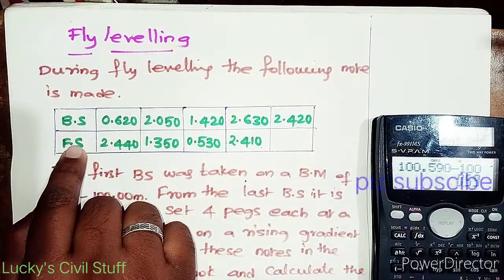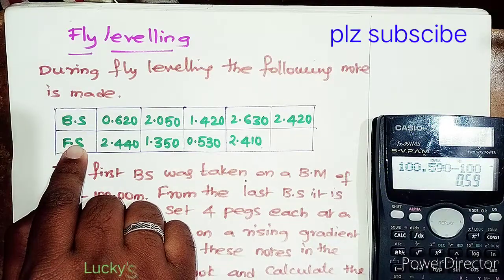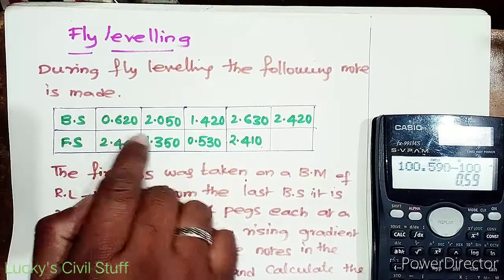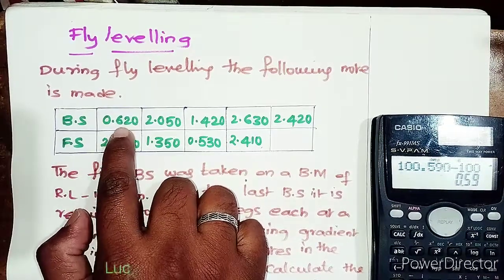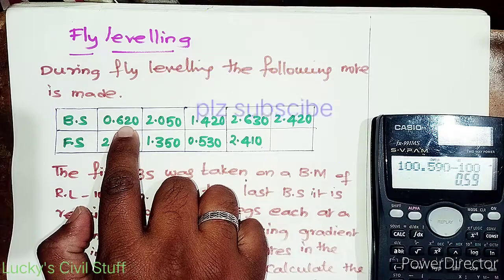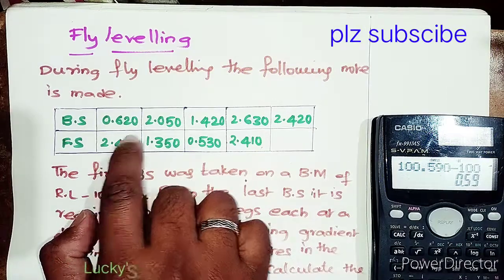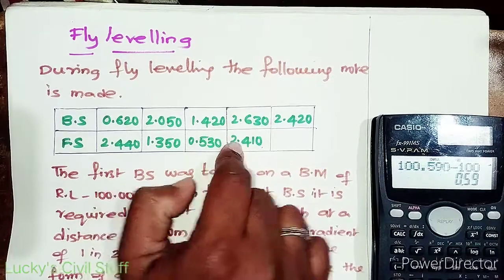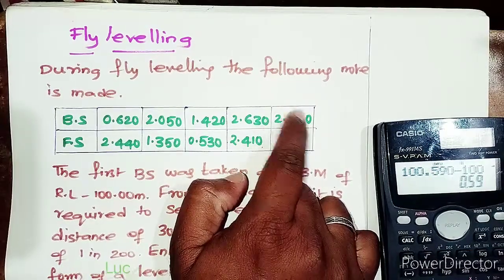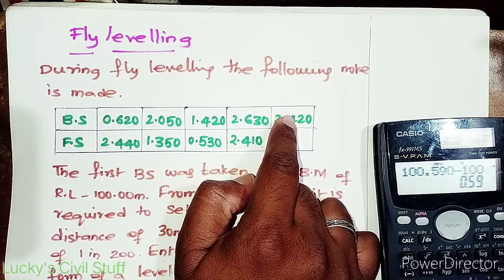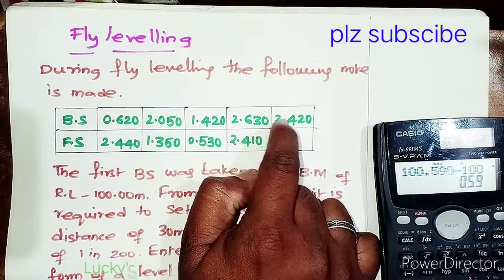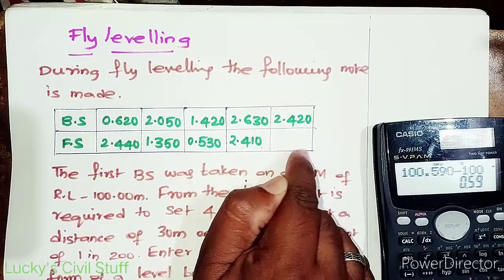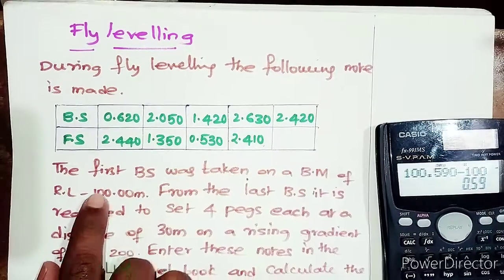For fly leveling, only backsight and foresight are taken — no intermediate sights. The given values are: 0.620, then foresight, backside, foresight, backside, foresight, backside, foresight. The last value is a backside, which means there is some extra work to be done by us.